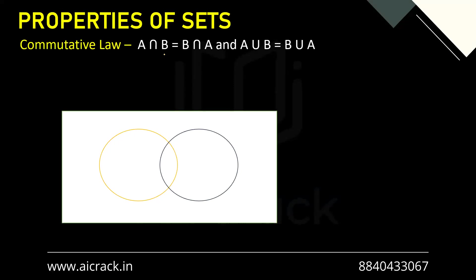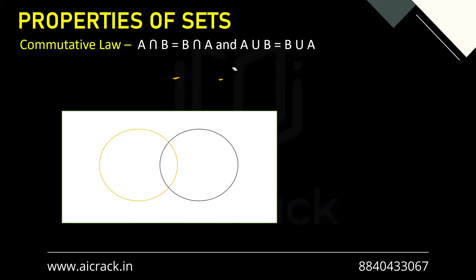Commutative law says that A intersection B equals B intersection A, and A union B equals B union A. We can take the analogy with the help of numbers — we know that 1 plus 2 equals 2 plus 1. It's the same thing. The operator is the same; just the numbers are shifting. Similarly, here the sets are interchanging, but the operator is the same and both mean the same.